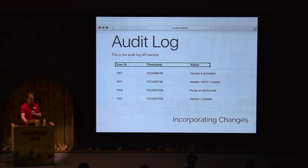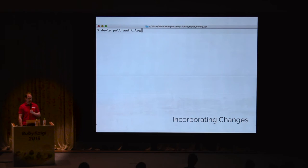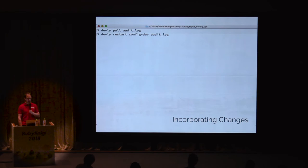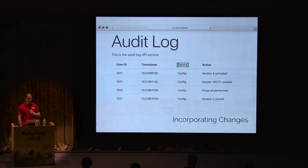Let's switch to the terminal to update our service. We'll pull the latest image. Our running audit log service is still using the old image, so we'll need to shut it down and start a new one. We can do this with devly restart, which will replace our audit log service with a new one running the updated image. We switch back to the browser, refresh the audit log service, and we see the source field has appeared just where we expect it. Now that our audit log service is running the latest image, we can continue updating our service to use the source field.